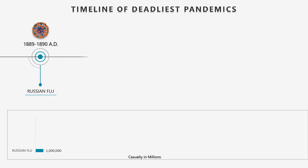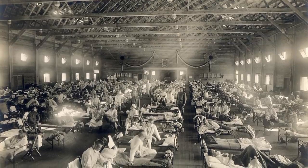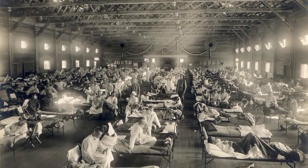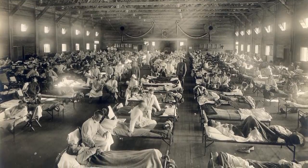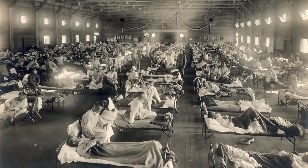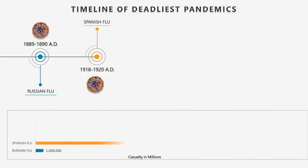At number 9: The Spanish Flu Pandemic. The Spanish flu, also known as the 1918 flu pandemic, was an unusually deadly influenza pandemic lasting from January 1918 to December 1920. It infected 500 million people — about a quarter of the world's population at that time. The death toll is estimated to have been anywhere from 17 million to 50 million, and possibly as high as 100 million, making it one of the deadliest epidemics in human history.